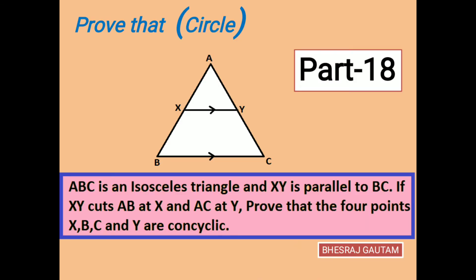In our today's question, we are proving X, B, C and Y as concyclic points, which also means that X, B, C, Y is a cyclic quadrilateral.